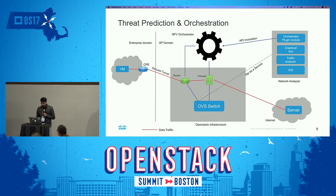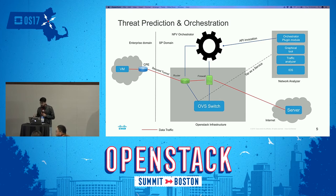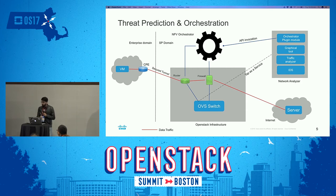Before, there was only a router as a service; now we have coupled the router with firewall as a service as well. The network analyzer tool has an IDS — the intrusion detection system — which can do deep packet inspection, pattern analysis, and signature analysis of traffic. There is also a graphical tool connected. When a certain kind of threat is detected, the API can be invoked and the proper NFV, or rule, which can handle that threat, can be created on demand.